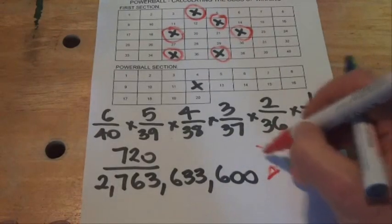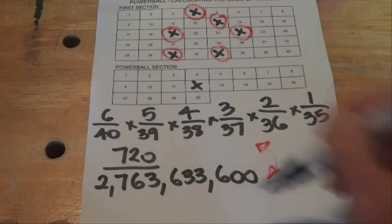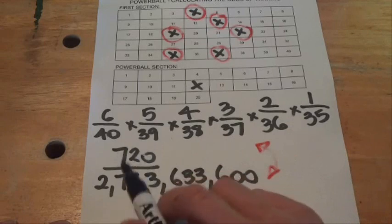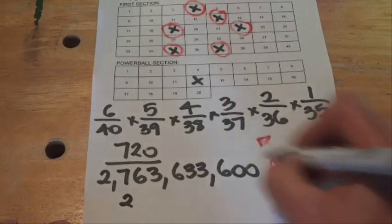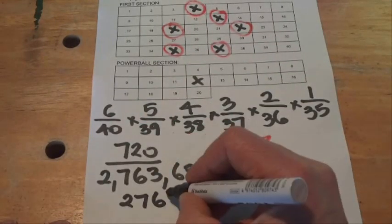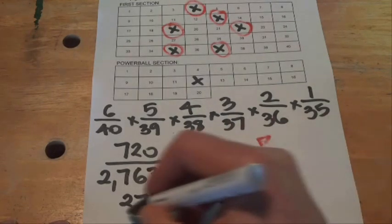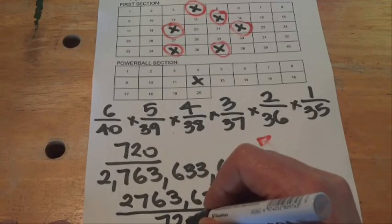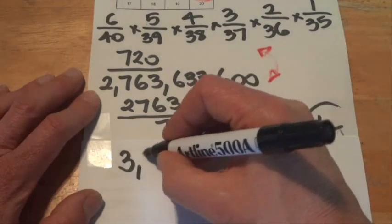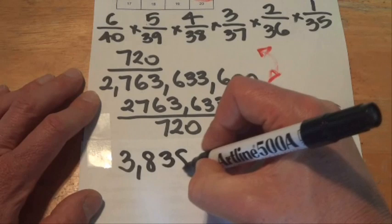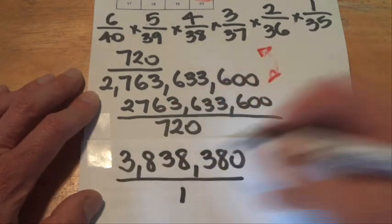Now what we want to do is express that as a ratio - one in so many million chance of winning. At the moment we've got 720 chances in 2.7 billion. So what we want to do is flip that fraction around, so we'll put the 2.763 billion on top, and then we'll divide that by 720, and we'll end up with a figure of 3.8 million: 3,838,380 over 1.